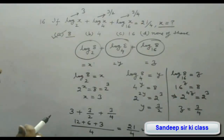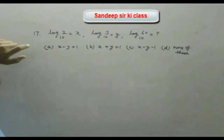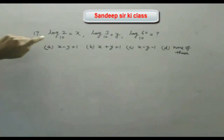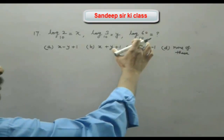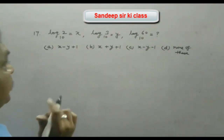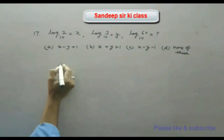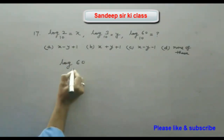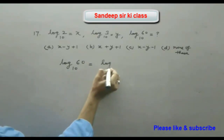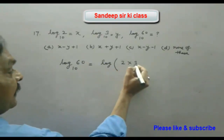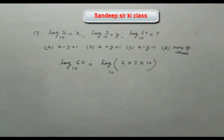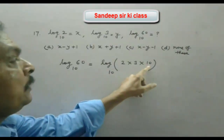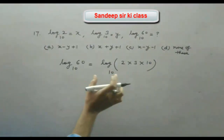We now move to question number 17. It is given that log 2 to the base 10 is x and log 3 to the base 10 is y, and we have to find log 60 to the base 10. We write 60 as 2 × 3 × 10.